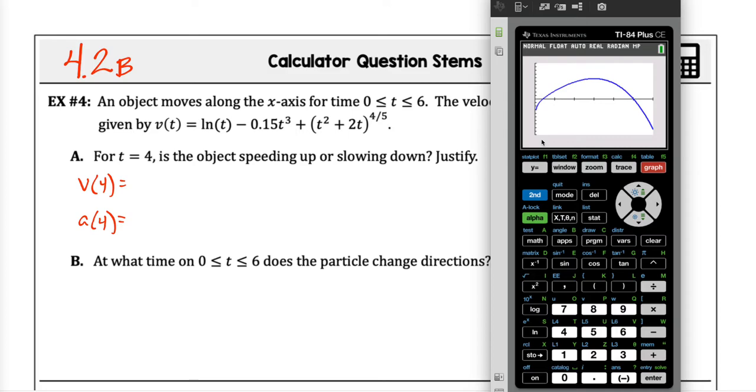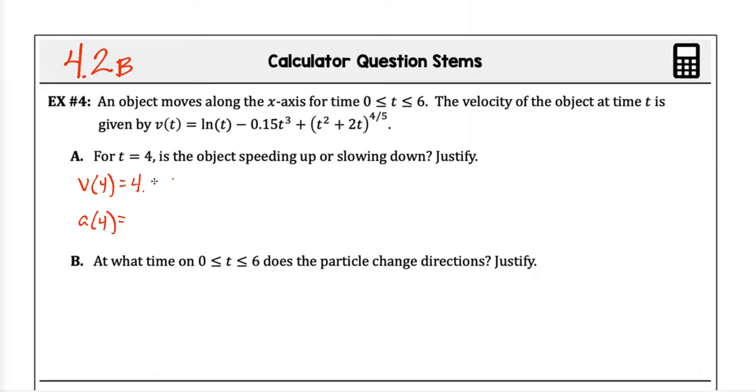So if I want to find out what the velocity at four seconds is, this is the velocity function. I'm going to hit trace, and then I'm going to hit four, because then it will go exactly to four. I know a lot of you have used the trace in the past, and you just sit there and hit the arrows left and right until it's close to where you want it, but you can tell the calculator exactly where you want it to go. So V of four is 4.497. And I'm pretty much always going to go to three decimal places, just because AP likes that.